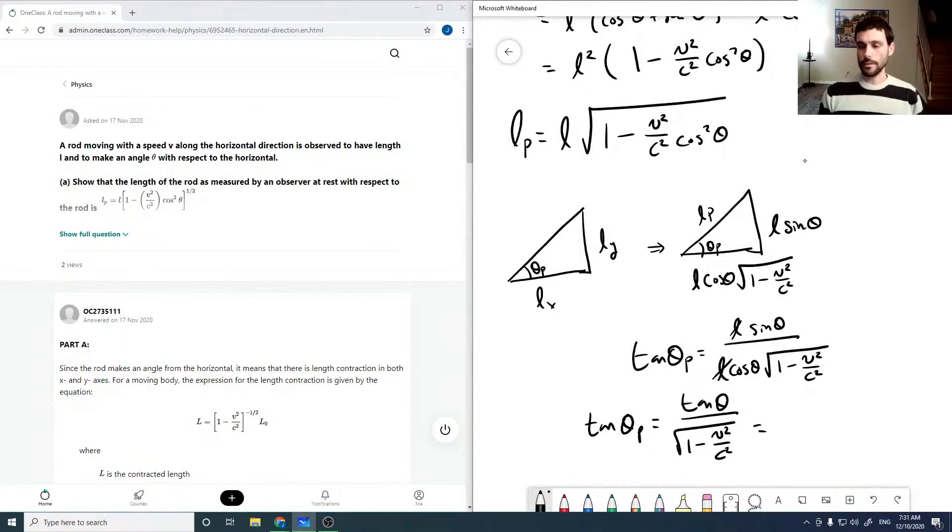And usually that term is called gamma, so gamma tan theta. Which is again, what we were asked to show, that the angle now goes to a gamma tan theta. So the angle that it makes with the horizontal is also changing. It's compressing along the X direction and changing the angle that it makes.